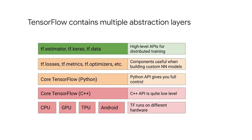Now, if you see example TensorFlow code on the internet that does not use the estimator API, ignore that code. Walk away — it's not worth it. You'll have to write a lot of code to do device placement, memory management, and distribution. Let the high-level API handle all of that for you.